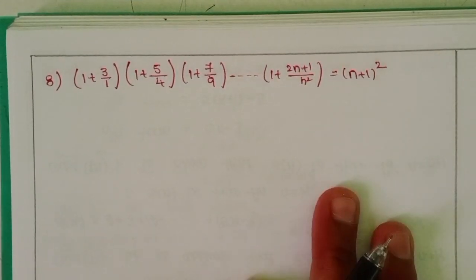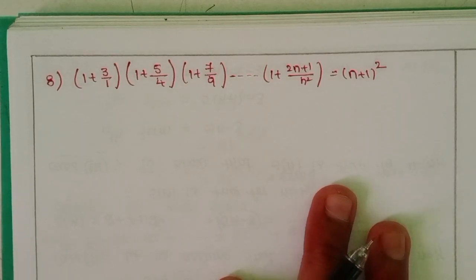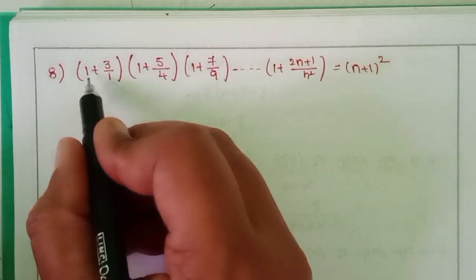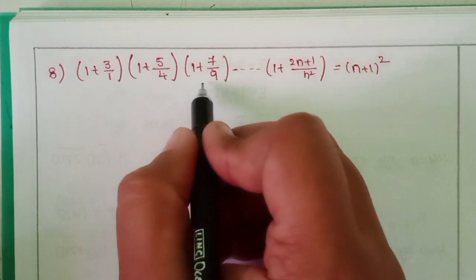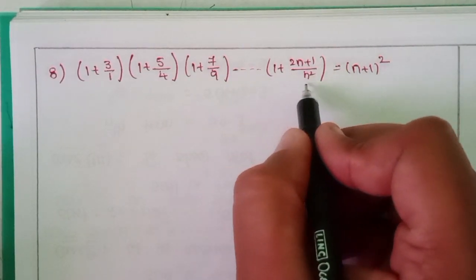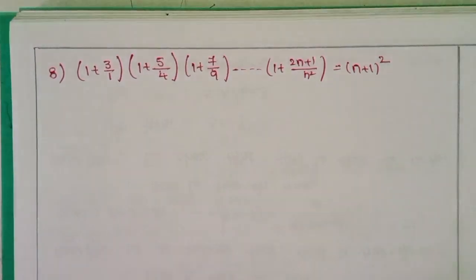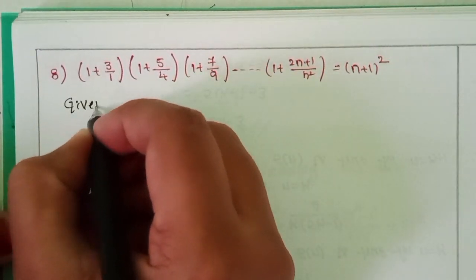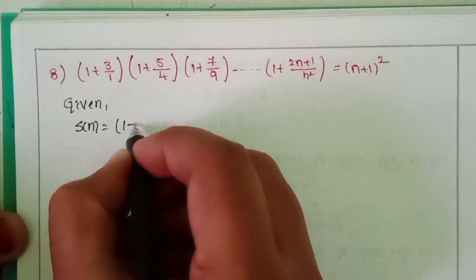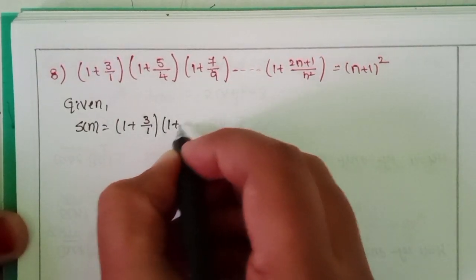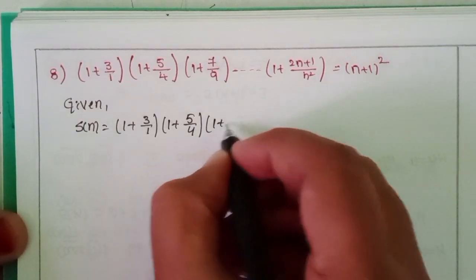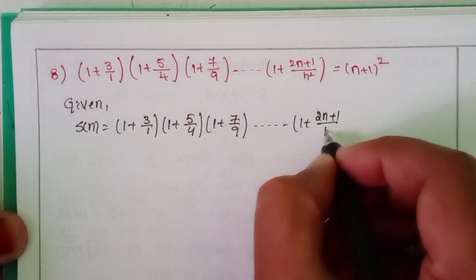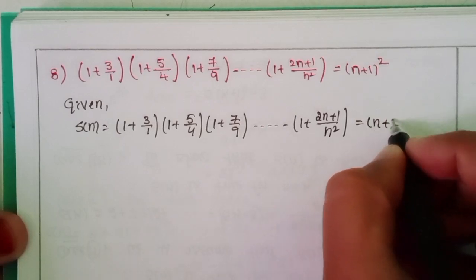This is Shahin. Welcome back to our channel. Today we will discuss Intermediate First Year 1A, Chapter 2, Mathematical Induction, Exercise 2a, Problem 8: (1 + 3/1)(1 + 5/4)(1 + 7/9)··· (1 + (2n+1)/n²) = (n+1)². The nth term is already given directly as S(n).